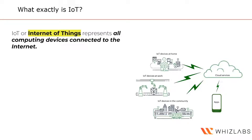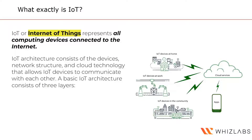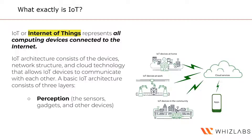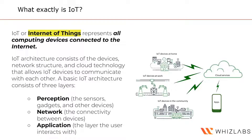IoT, or Internet of Things, represents all of these computing devices which are connected to the Internet. A typical IoT architecture consists of devices, the network structure, and the cloud technology that allows these devices to communicate with each other. A basic IoT architecture consists of three layers: the perception layer with all sensors, gadgets, and devices; the network layer for connectivity between devices; and finally the applications which the user actually interacts with.